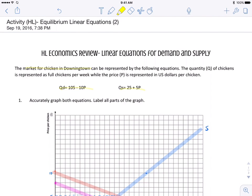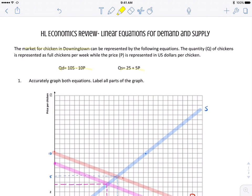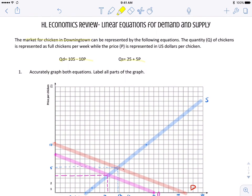All right guys, this is a quick review of extra practice if you needed help from the linear demand and supply work that we did yesterday in class. We're looking at the market for chicken in Downingtown and you can see the demand and supply equations there.